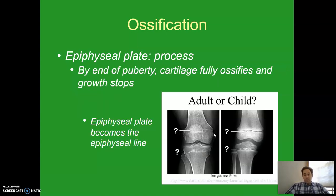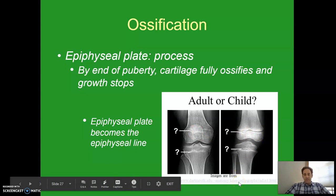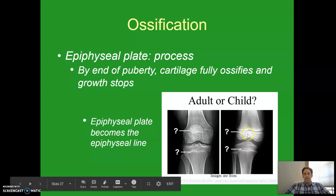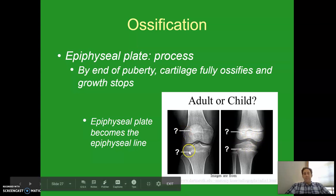By the end of puberty — which is about the age you are now — that cartilage fully ossifies and growth stops. Here are two x-ray images: one of an adult and one of a child. In the child, you can see that band of cartilage in the x-ray at the knee — the femur and the tibia and fibula both have these little bands of cartilage. In the adult, they don't — it's fully ossified and completely bone. There's a little line called the epiphyseal line that remains as evidence that this once occurred.